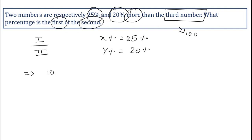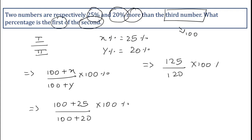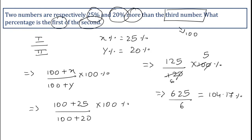Use the formula: (100 + x) / (100 + y) × 100%. Substituting the known values of x and y, it becomes (100 + 25) / (100 + 20) × 100%, which is 125/120 × 100. Solving this: 5 × 125 is 625 upon 6, which equals 104.17 percent. So the first number is 104.17 percent of the second.